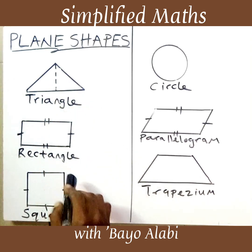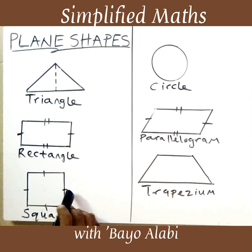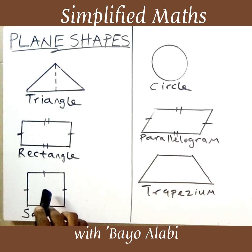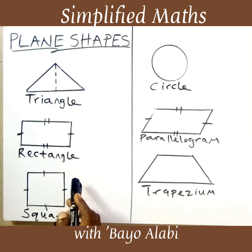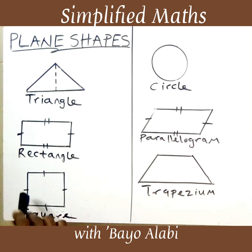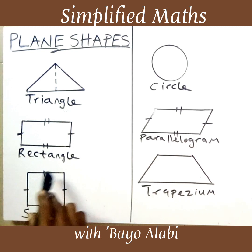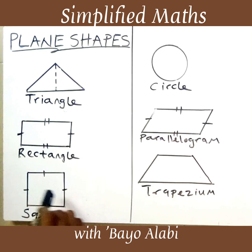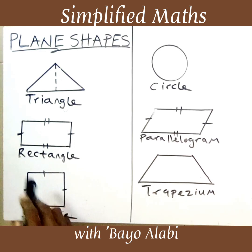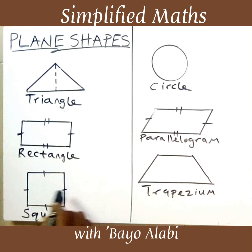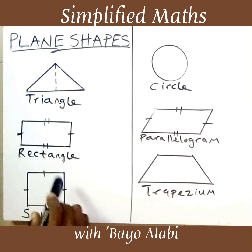The next one is a square. A square is a shape with four equal sides, as indicated by these lines — each side of a square is equal to the other. If you check around you, you will see objects that have this square shape.